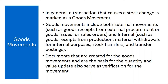A transaction that causes a stock change is marked as a goods movement in the SAP system. So any transaction that results in a stock increase or decrease — for example, receiving material increases stock quantity, issuing stock reduces it — all these are called goods movements.